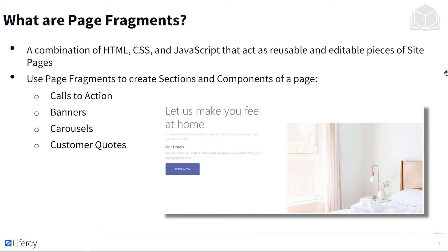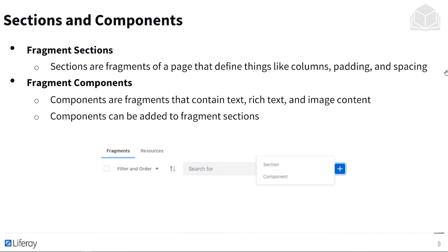In our image, this entire piece shown is a page fragment — something we could place on a page that has text, a graphic, and an interactive button. Fragments are broken into two types: sections and components. Sections are fragments that define things like column, padding, and spacing — they provide structure to the page. Fragment components contain text, rich text, and image content, and are added into the fragment sections. Think of sections as a framework and components as the items housed within that framework.